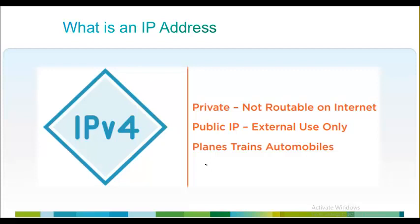Private addresses are not exposed to the public network, so the public network does not know where these private networks are located. In other words, the public network cannot route packets that carry a private address — private packets are not routable on the internet.